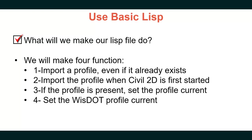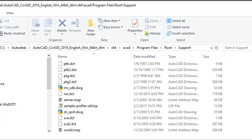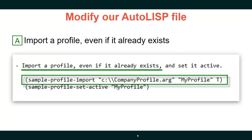Instead of starting our LISP from scratch, we can search for an existing AutoLISP sample. Autodesk provides a sample-profile-utility.LISP file that we can learn from and modify. If you don't find it in your installation, it may be in your install path. We will copy and save the sample profile-util.LISP, then modify it so that myprofile.arg loads each time Civil 3D is started, with commands to set our profile current and to set the WisDOT profile current.